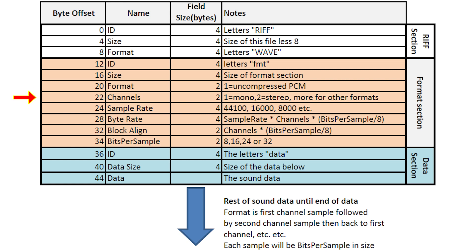Channels: for our purposes should only be the numbers one or two, either mono or stereo sound. This is two bytes long, so we could in theory have up to 65,535 channels of a particular data type. Sample rate is the rate at which we should play back samples per second — very important to run at the correct speed, otherwise your sound's going to sound weird if it's too fast and maybe weirder if it's too slow. Our next important part for us is the bits per sample.